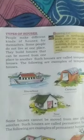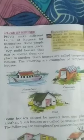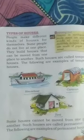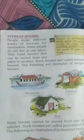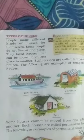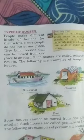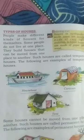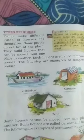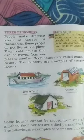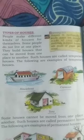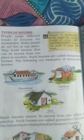Next topic: types of houses. People make different kinds of houses for themselves. Some people do not live at one place. They build houses that can be moved from one place to another. Such houses are called temporary houses. The following are examples of temporary houses.